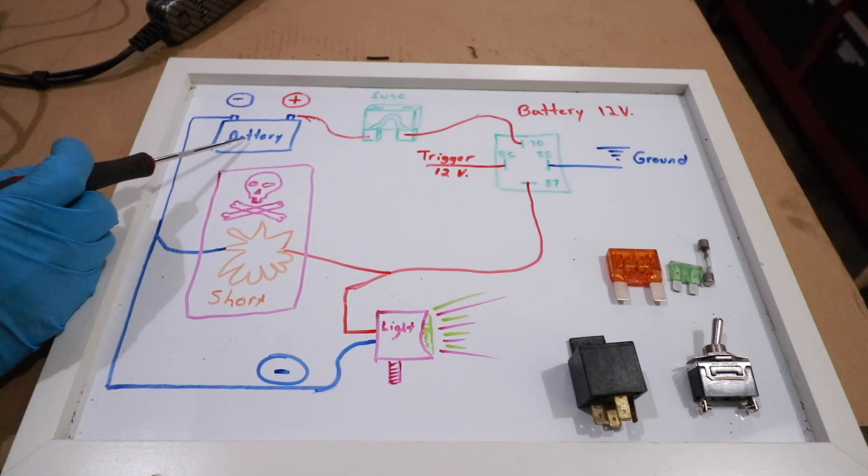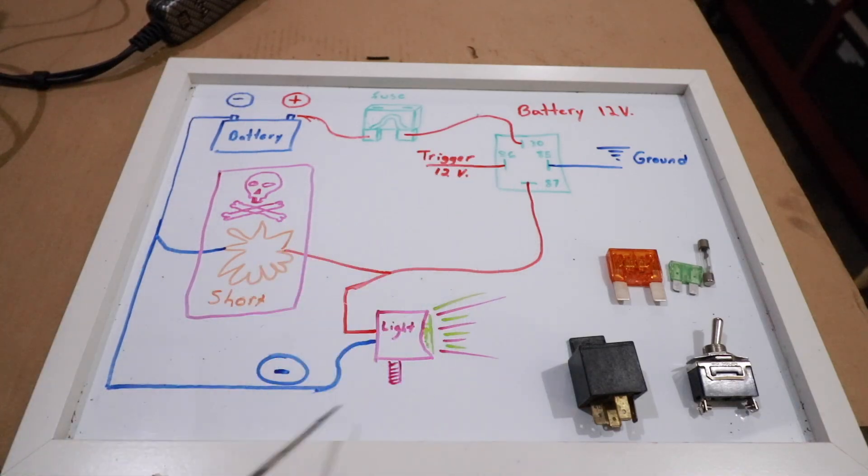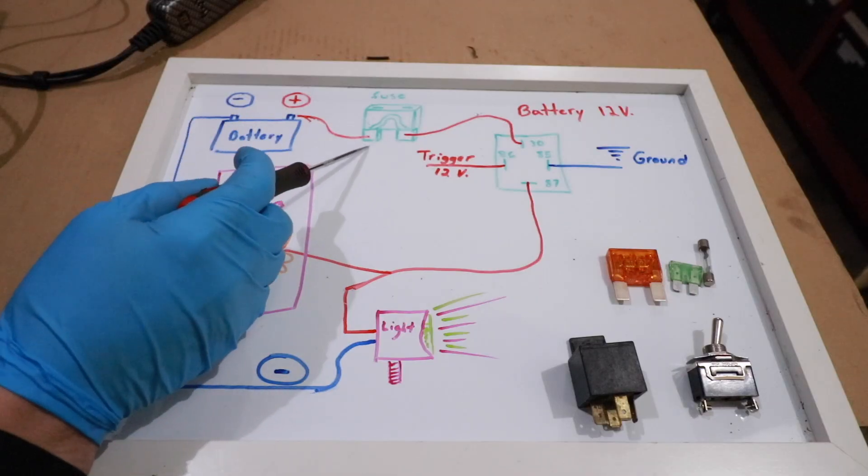Starting out, we have our battery. Our battery, when properly charged, should supply at least 12 volts of power to our circuit. From there we have a fuse.